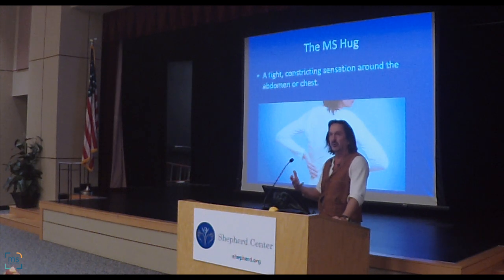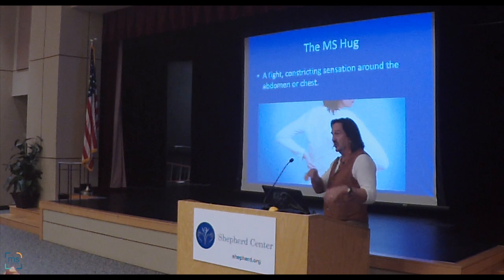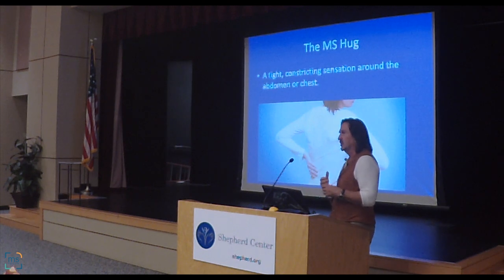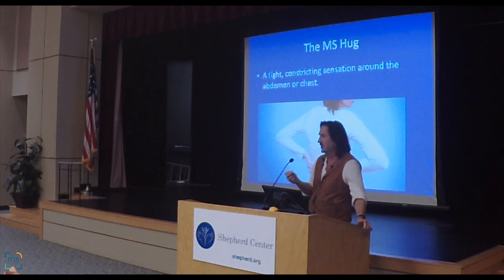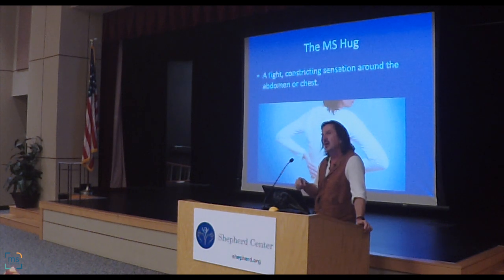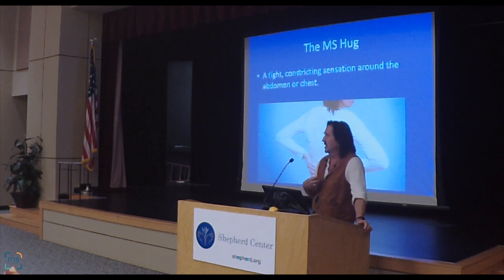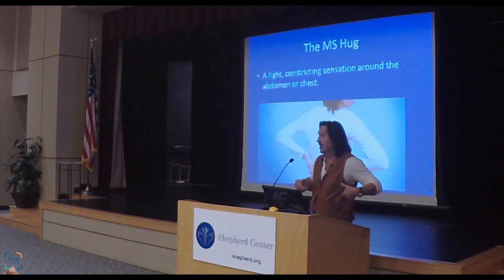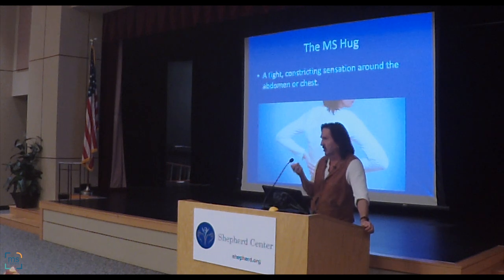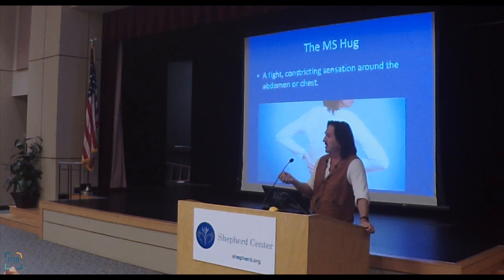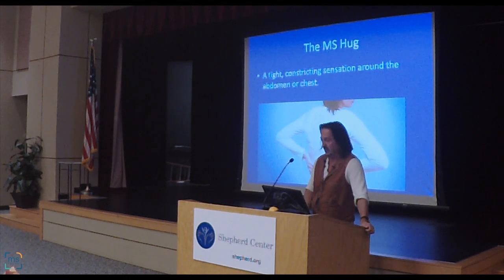If you ever have shortness of breath, we don't want you to assume it's just your MS hug — we medically want you to get checked out. But sometimes what we find is that it really is this MS hug causing a restrictive ventilatory defect. The way we would manage that is not by treating your lungs, because it's not a lung problem — it's a muscle problem on the outside. We would do things to loosen up those muscles using the treatments for muscle spasms and spasticity.